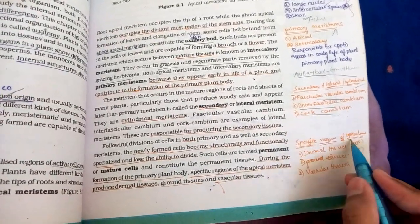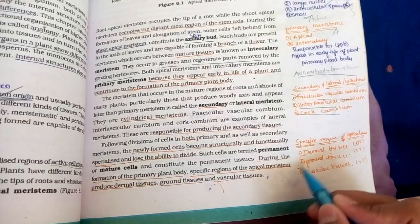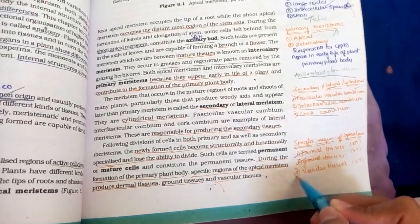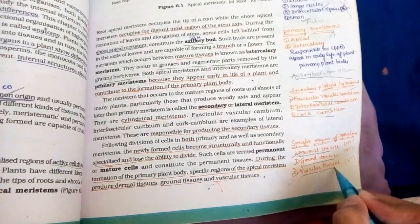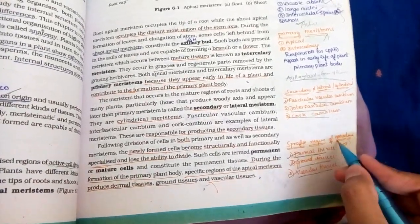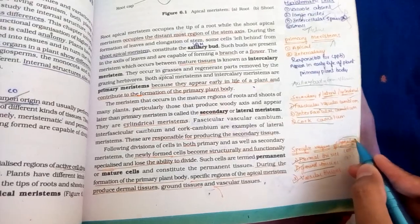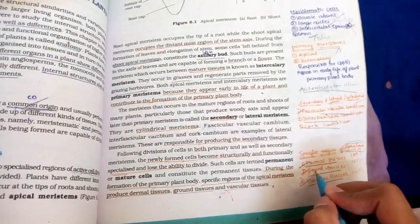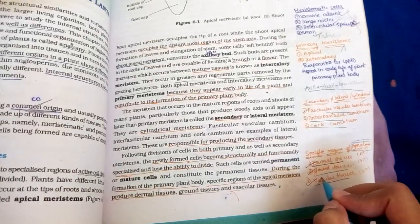Specific regions of apical meristem gives rise to dermal tissues, ground tissues and vascular tissues. So dermal tissues, ground tissues and vascular tissues originate from apical meristems. So meristems have many important points, so in the next video we will have a permanent tissue revision.